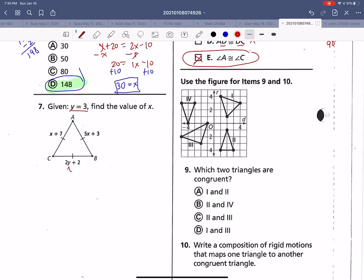Given that Y is 3, find the value of x. So Y is 3. So 2 times 3 plus 2, 6 and another 2 is 8. So this is 8. And these are all equal. This has to be 8. This has to be 8. So X plus 7 has to be 8. That means X has to be 1. I can also look at 5X plus 3 has to be 8. 5X divided by 5. Yep. X is 1. So what is X? X is 1.